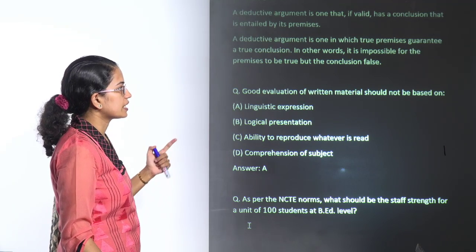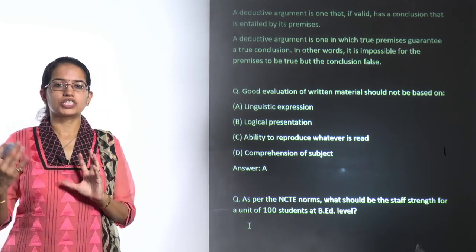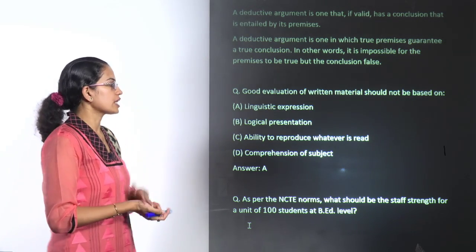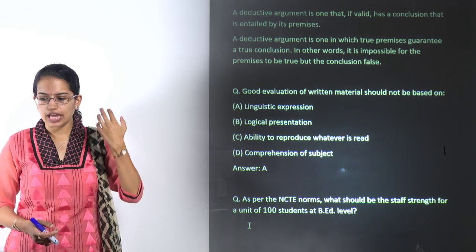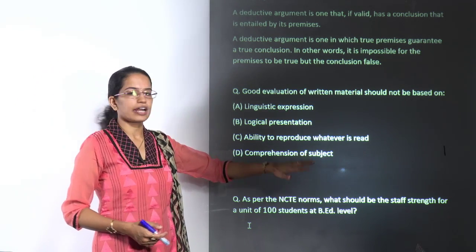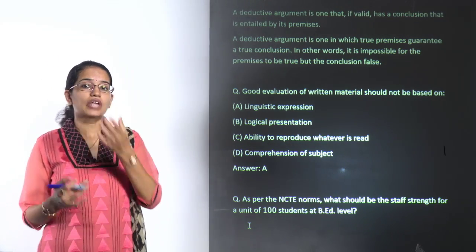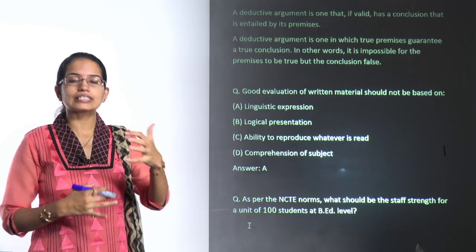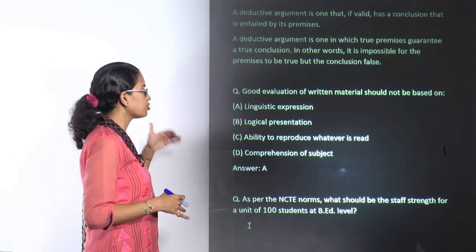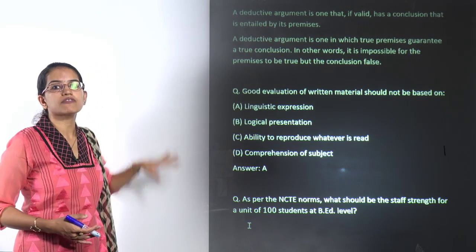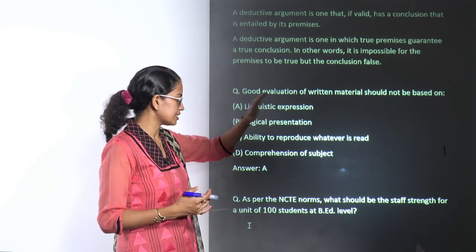The next question: good evaluation of written material should not be based on what? In a subjective examination with long or short answer questions, evaluation considers logical presentation, the ability to write what you have read, and good comprehension of the subject. But it's okay if the language is not appropriate or there are grammatical errors — that is subsidiary. The primary things are knowledge, comprehension, and logical arrangement.